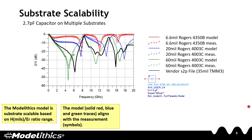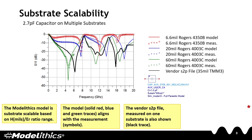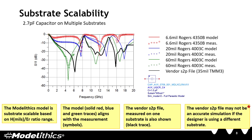In this plot, the model represented by the red, blue, and green solid traces aligns well with measurement data shown with symbols. Compare this to the vendor S2P file, which is shown with a black bold trace. It can be seen here that substrate has a large effect on part performance. If a vendor S2P file is used in a simulation of a different substrate, then an accurate simulation may not be possible.